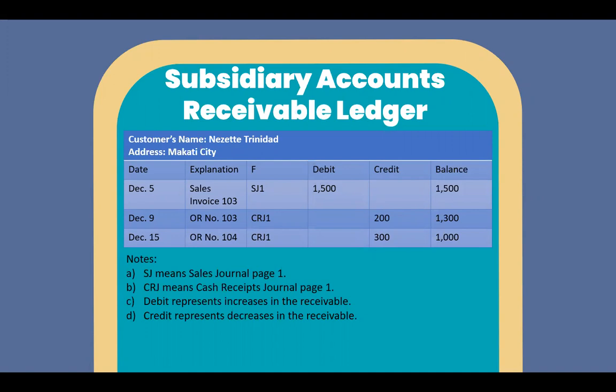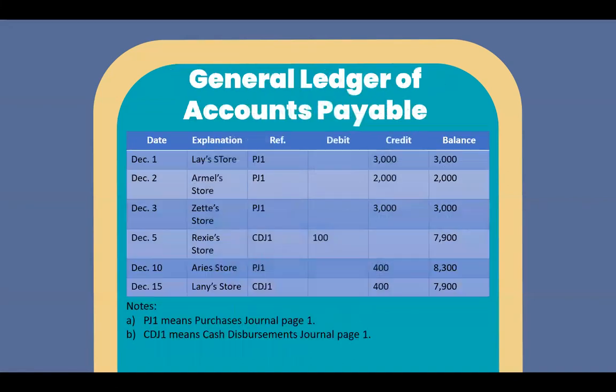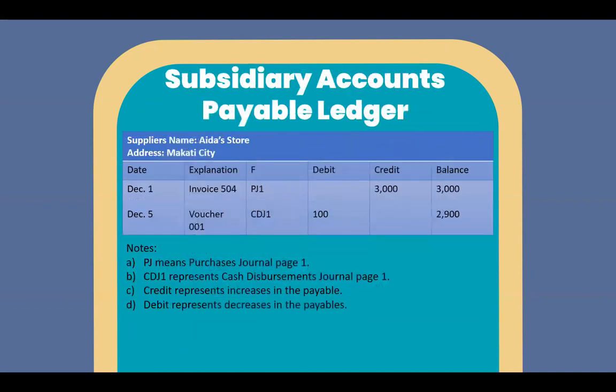In the subsidiary accounts receivable ledger, SJ means sales journal page 1 and CRJ means cash receipts journal page 1. Debit represents increases in the receivable, and credit represents decreases in the receivable. In the general ledger of accounts payable, PJ1 means purchases journal page 1, and CDJ1 means cash disbursements journal page 1. In the subsidiary accounts payable ledger, PJ means purchases journal page 1, CDJ1 represents cash disbursements journal page 1, credit represents increases in the payable, and debit represents decreases in the payable.